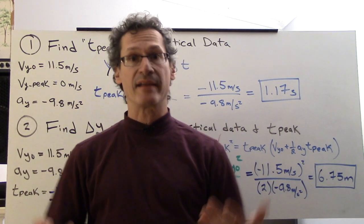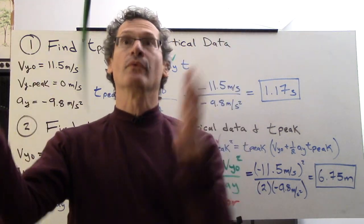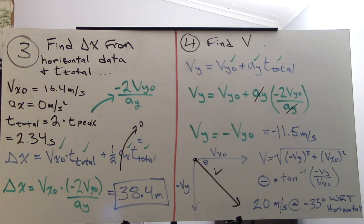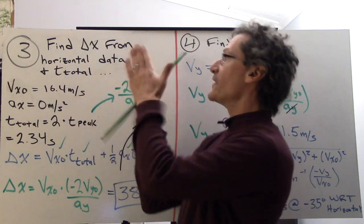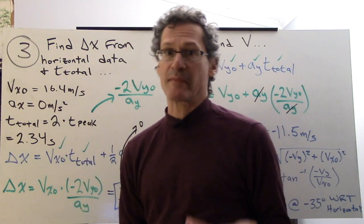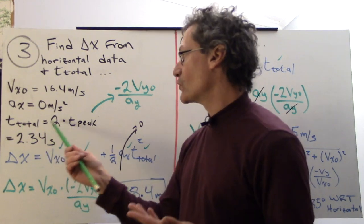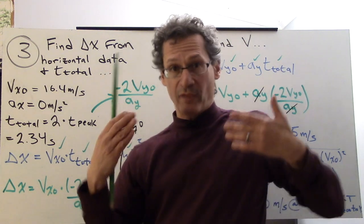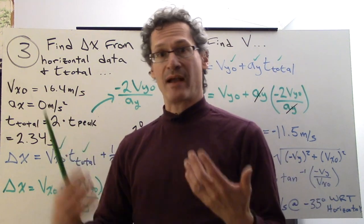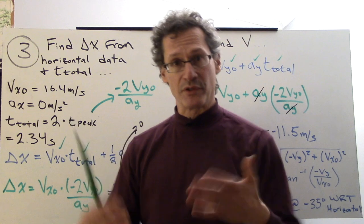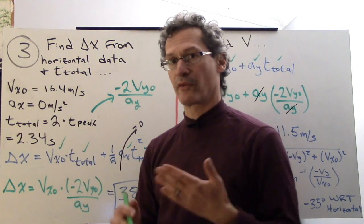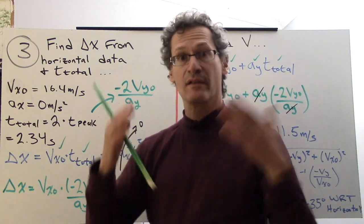So what we're going to do is find the range next. Let's find delta x from the horizontal data and t-total. It's important that we use t-total because that covers the whole range. And because this is a symmetrical problem, what we can see here is that t-total is equal to twice that of t-peak. Remember from the hang time video with the basketball players that the sensors they used indicated that what goes up comes down at the same time.